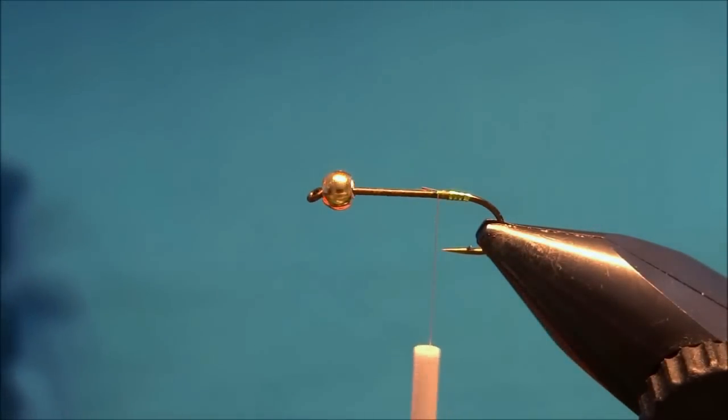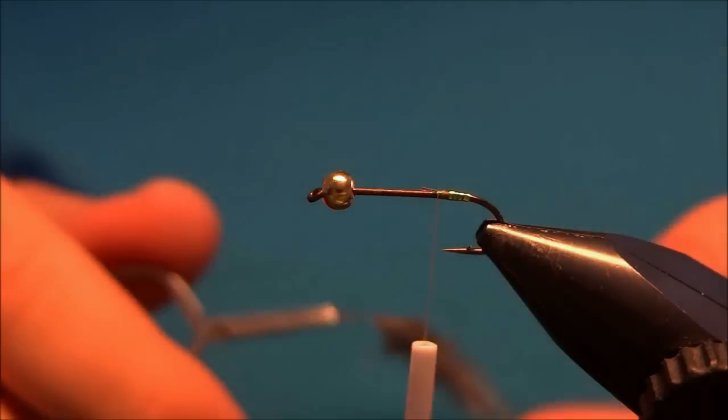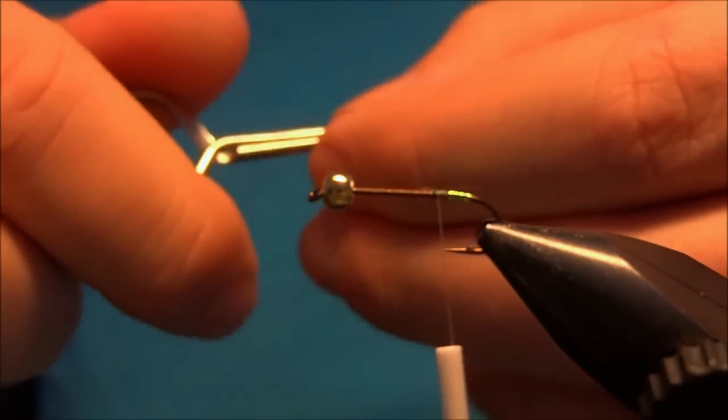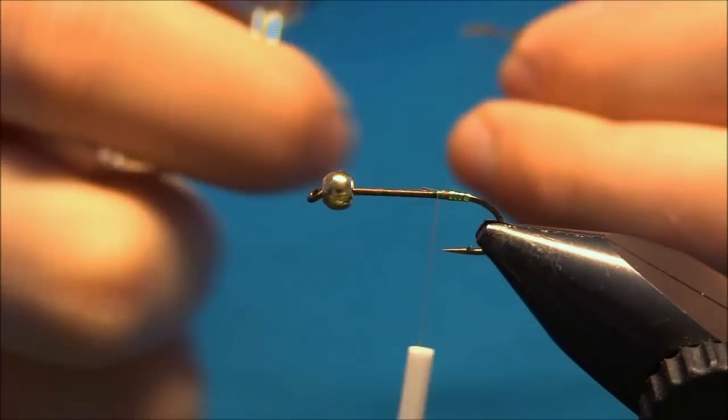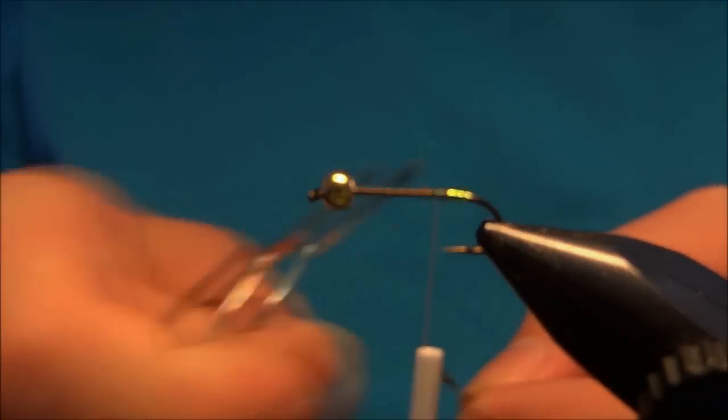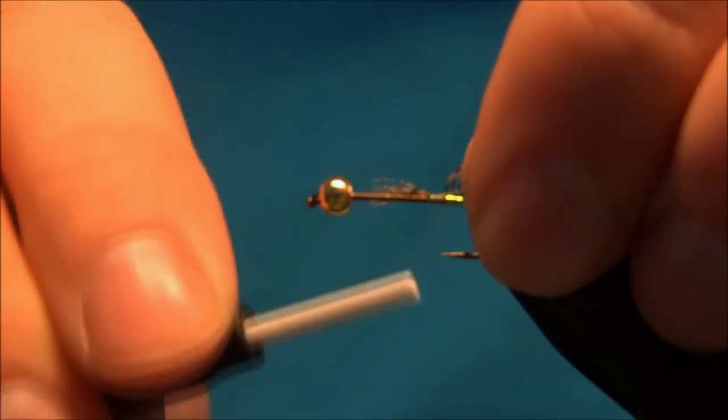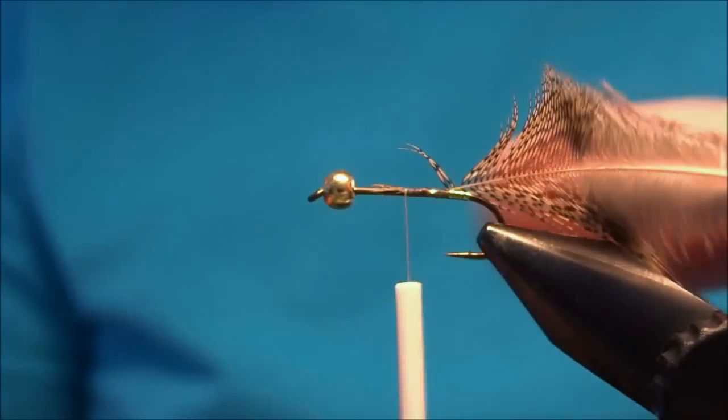Now I'll tie in the first pair of legs. I use English partridge in brown. It's easier to handle with hackle pliers. Take the tip and stroke back the fibers. We'll tie it in by the tip at the point of the hook.